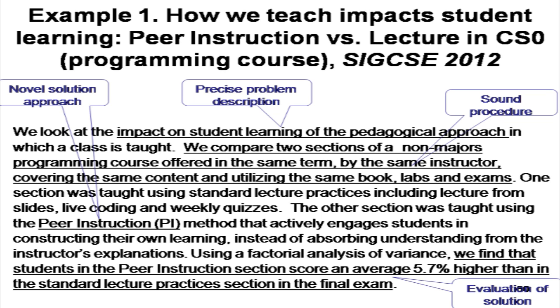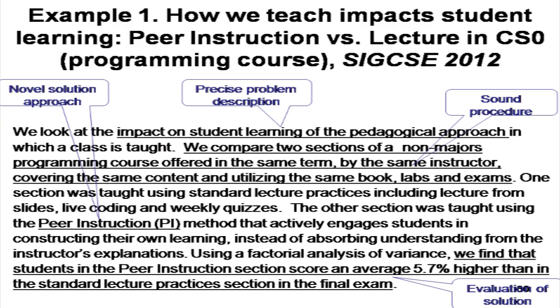These authors have implemented a very sound procedure by keeping all variables not related to the study constant, and varying only whether there is a lecture or a peer instruction method. In your research studies, you have to think of a procedure which is sound and implemented systematically. There was a novel solution approach, a precise problem definition, and a sound procedure. The last sentence says that students in the peer instruction section scored an average of 5.7 percent higher than in standard lecture practices in the final exam. So the researchers have evaluated their solution, compared the two conditions on the final exam, and from the scores have done an analysis and told us what sort of analysis they have done. This research study has evaluated the solution in a very sound manner.